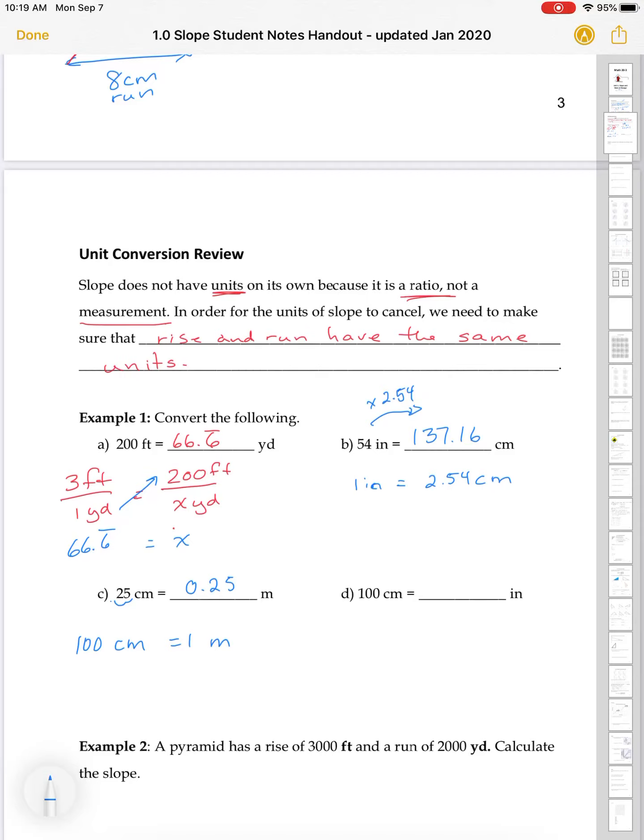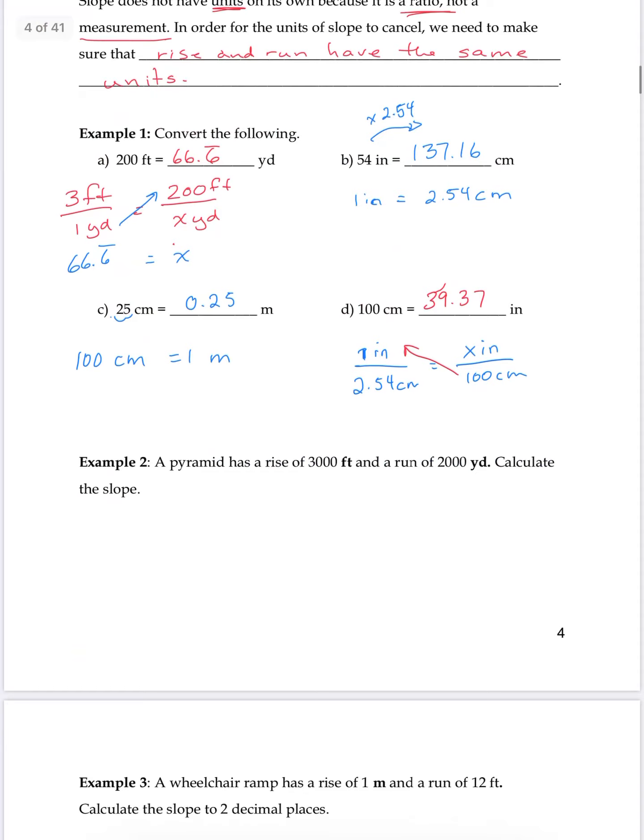100 centimeters is how many inches? Well, we said one inch is 2.54 centimeters. So, if I have, looking at what I did over here, one inch is 2.54 centimeters. So, how many inches is 100 centimeters? And, I'm going to cross-multiply and divide. So, 100 divided by 2.54. And, I get 39.37 inches. Now, hopefully we get a lot where we're not having to do conversion. That would be lovely. But, let's see what happens.